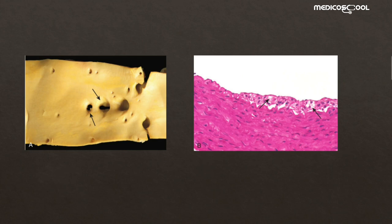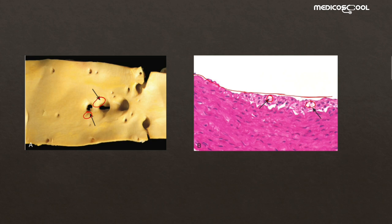These pictures show the fatty streaks — the yellow regions visible grossly. Microscopically, we can see the endothelium, and under it, the white areas representing the lipid-laden or closely packed foam cells. Some inflammatory cells are also visible. The media consists of smooth muscle cells that can infiltrate into this area, and there are also extracellular lipids, collagen, and proteoglycans.